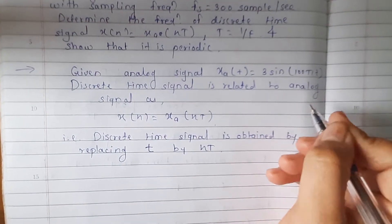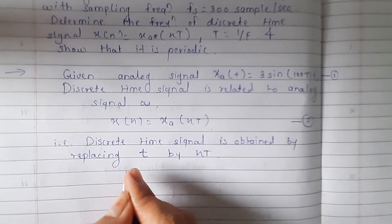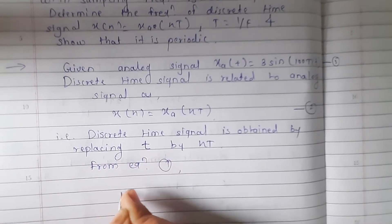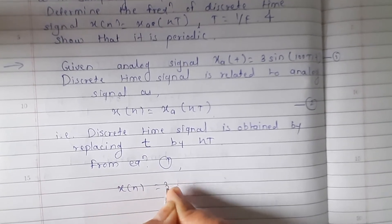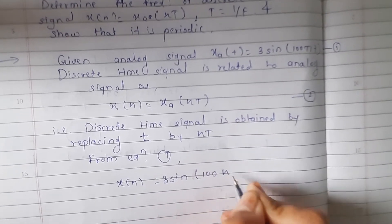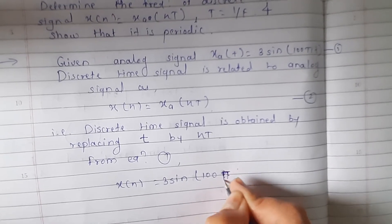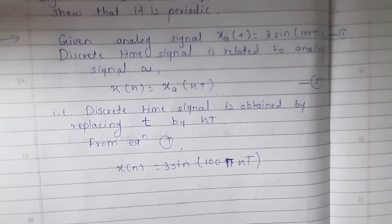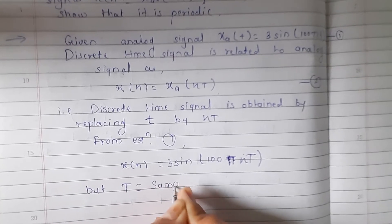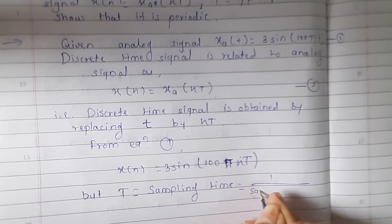This is equation 1 and this is equation 2. From equation 1, we can write x(n) = 3sin(100πnT). Now, what is T? T is the sampling time, which is equal to 1 divided by the sampling frequency.